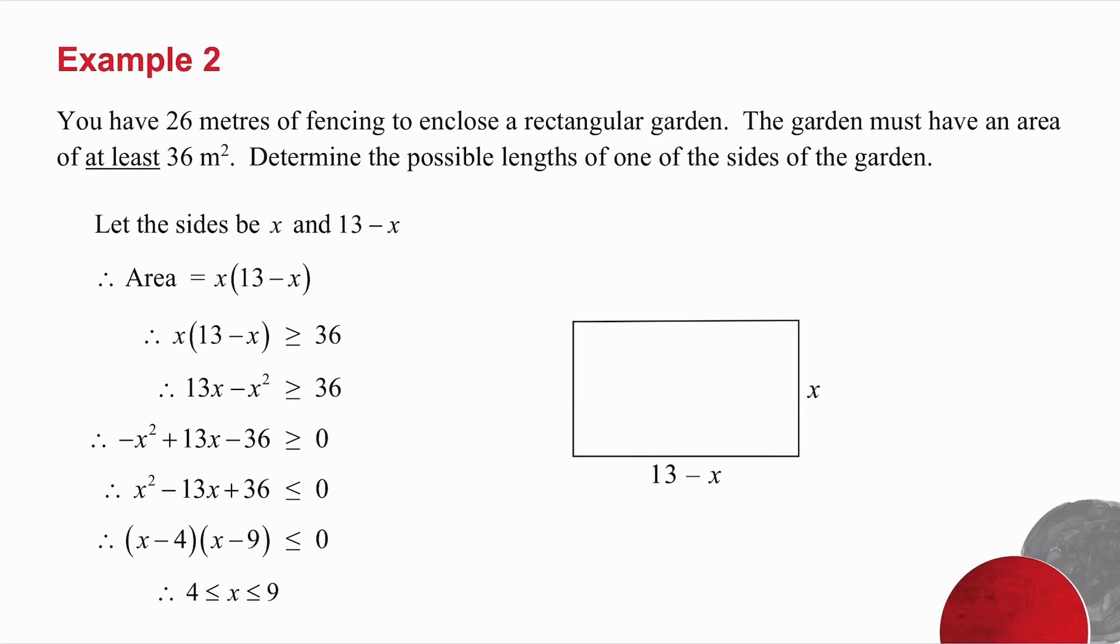I find drawing a picture helps. So you've got a rectangular garden. I let one of the sides be x. Now I've got 26 meters for all four sides, which means for these two sides, I must have 13 meters. So if one side is x, the other side must be 13 minus x. Because then these two sides use 13 meters, the other two sides use the other 13 meters, and there's my 26 meters. So I let the sides be x and 13 minus x.